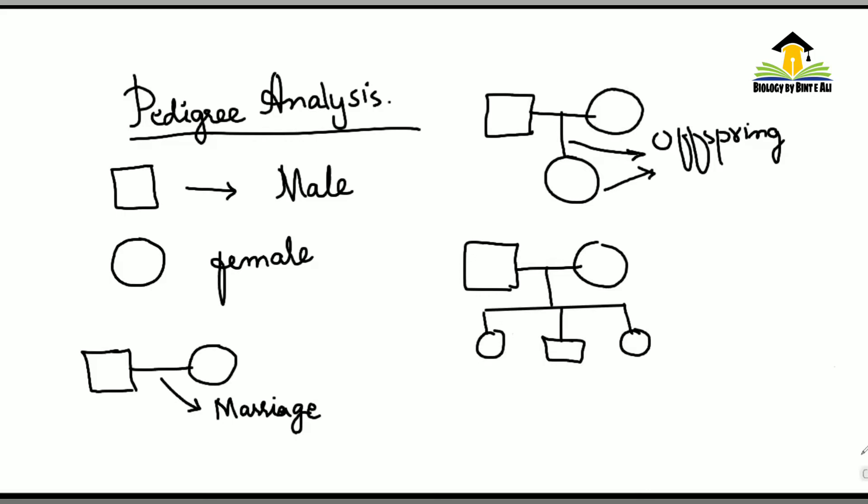Agar circle half colored ho, like this, and half clear ho is tarah se white, is tarah ki individual ko kehte hain heterozygous female. And if the square is half colored, half white, then we call it heterozygous male.